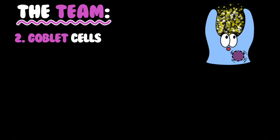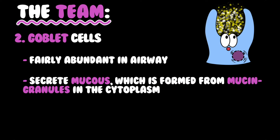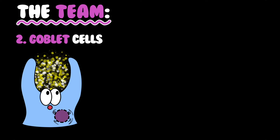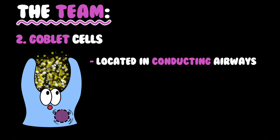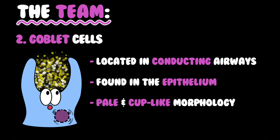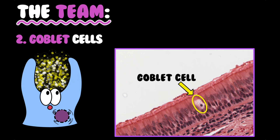Goblet cells are fairly abundant in the airway. They secrete mucus which is formed from mucin granules in the cytoplasm, and the mucus traps particulates and microbes. Goblet cells are located in the conducting airways, found in the epithelium, and are pale and cup-like in morphology. This is our epithelium, and this is a single goblet cell.